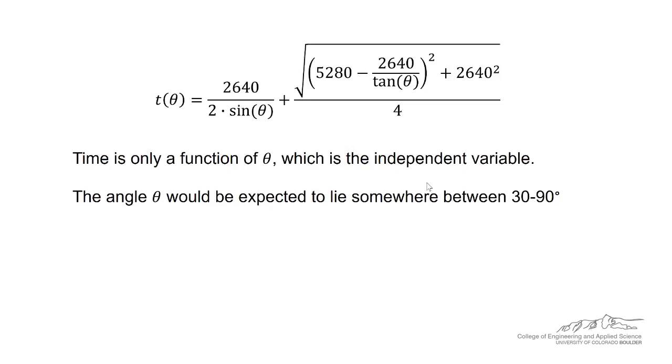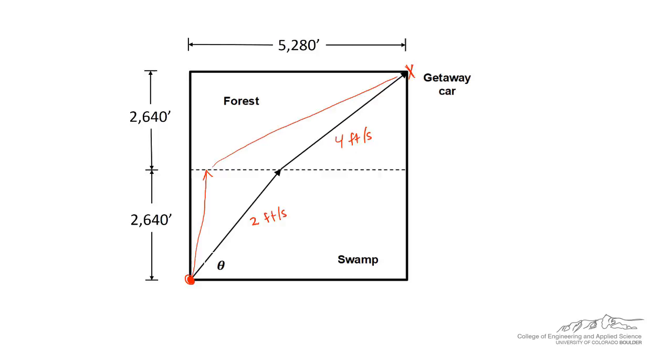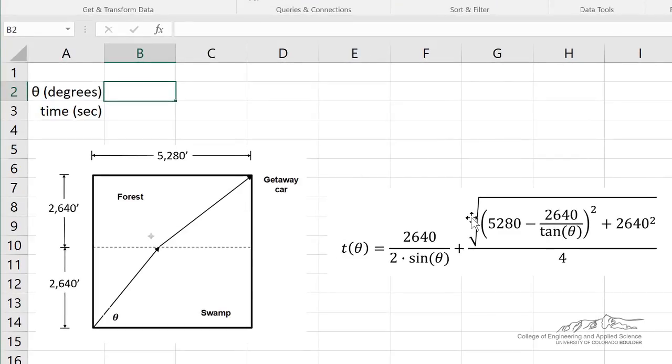If you set up an equation for this, you end up with the following. And this is just through simple geometry. The time it takes for you to get to the getaway car is a function of the angle, which is the independent variable. The angle is expected to be between 30 and 90 degrees. If you guess a theta, then you can plug it into the right hand side and that will give you the time required at that chosen theta that it will take you to get to the getaway car.